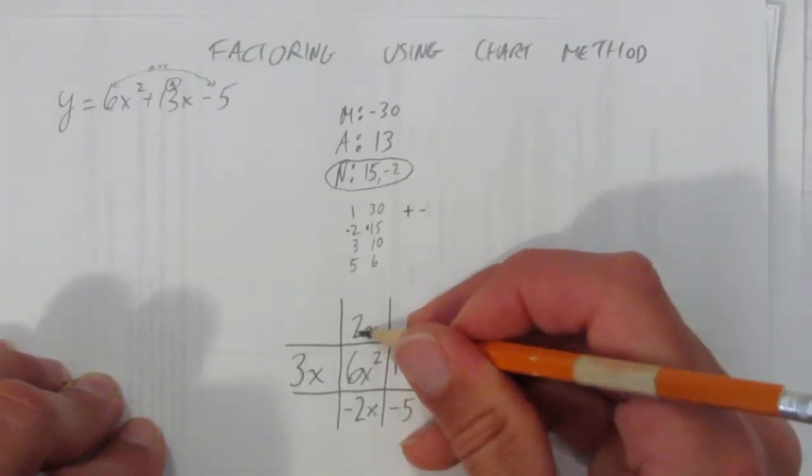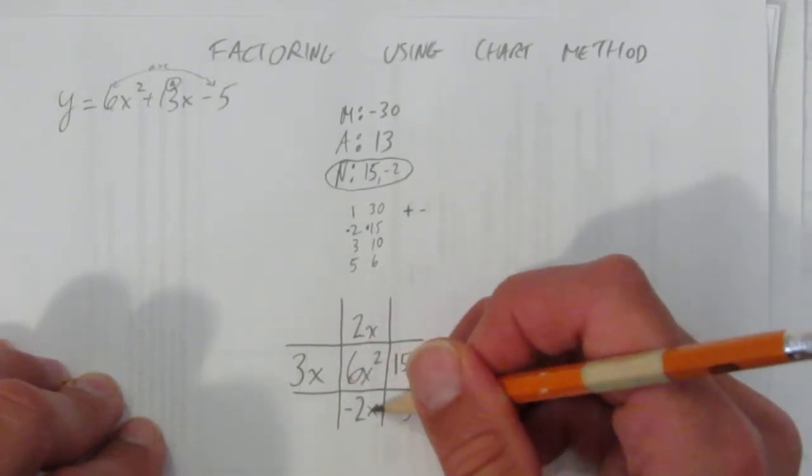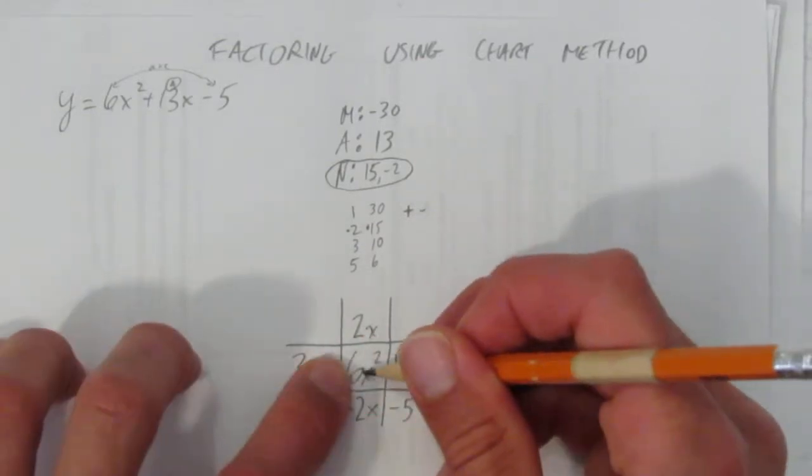And what goes into x squared and x and x? And notice this times this equals 6x squared. I factored this column. 2 went into both. x went into both. But 2 times 3 is 6. It has to be the case. This times this will equal that.